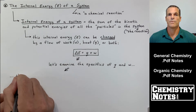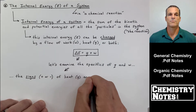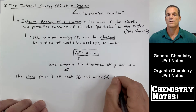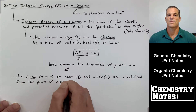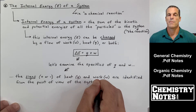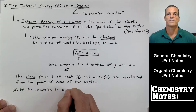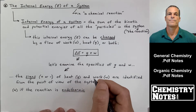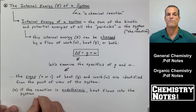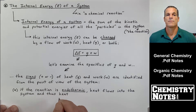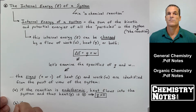Specifically, the signs — plus or minus — of heat and work are identified from the point of view of the system. The system is the chemical reaction. So heat and work and the plus or minus signs that go with them are always examined from the point of view of the system. We're going to have four points A, B, C, and D. A: if the reaction is endothermic, heat flows into the system, and thus Q is positive from the perspective of the system — heat is greater than zero.